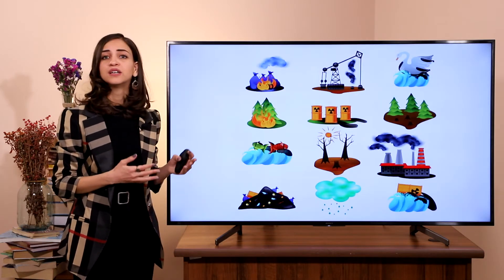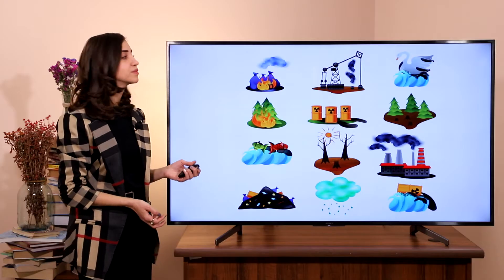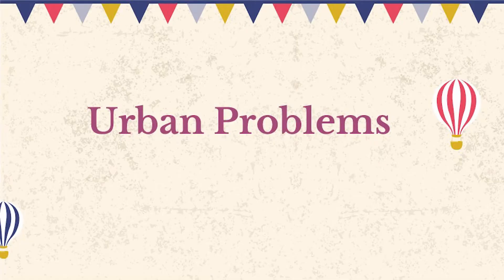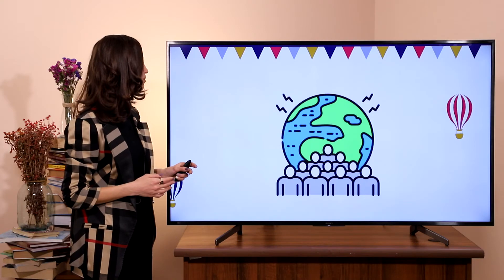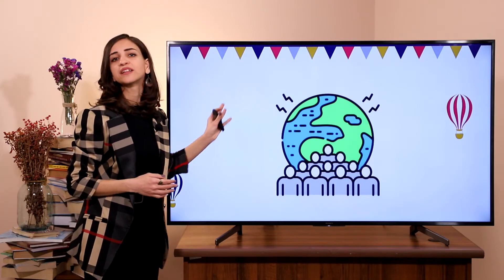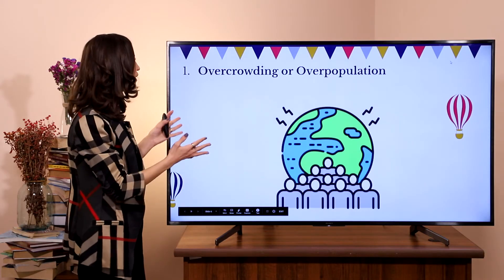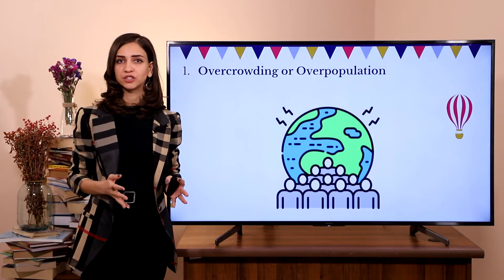So, dear students, please look at this picture. What problems can you notice here? Let's go one by one with the urban problems. What can you understand from this picture? What's the problem here? The problem here is overcrowding or overpopulation.